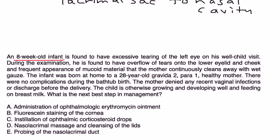Eight-week-old infant is brought to have excessive tearing of the left eye on his well-child visit. During the exam, he is found to have overflow of tears into the lower eyelid and cheek and frequent appearance of mucoid material that the mother continuously cleans away with wet gauze. The infant was born at home to a 28-year-old gravida 2 para 1 healthy mother. There are no complications during the bathtub birth. The mother denied any recent vaginal infections or discharge before delivery. The child is otherwise growing and developing well and feeding on breast milk. What is the next best step?